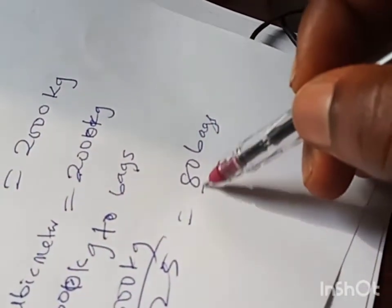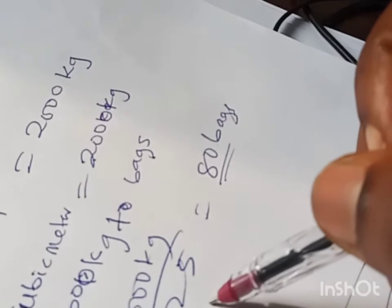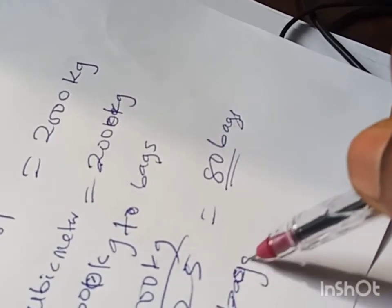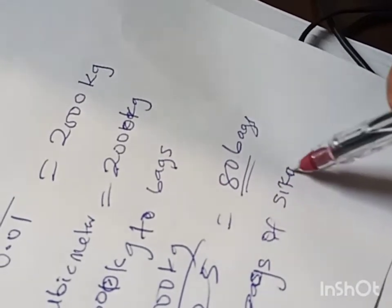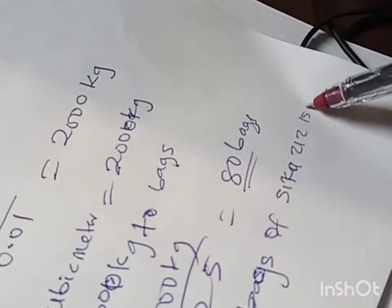So for every one cubic meter, 80 bags of Sika 212 is required.